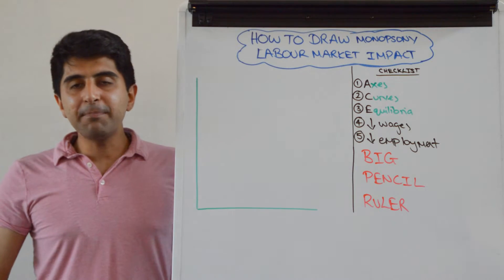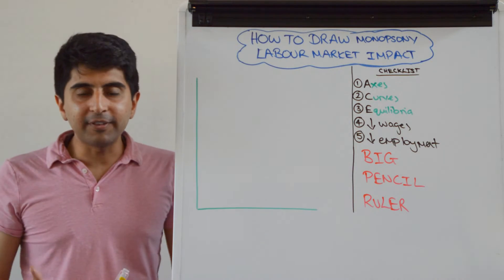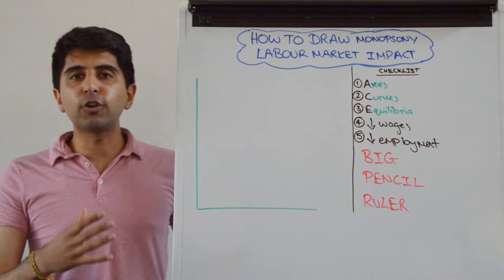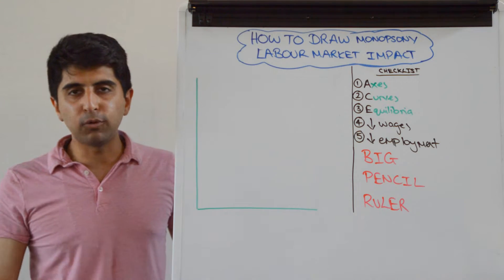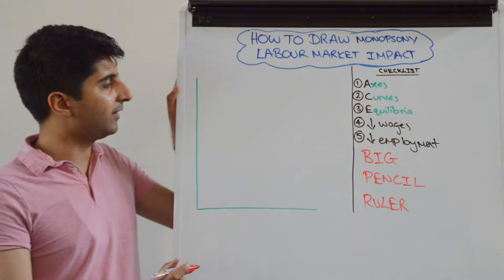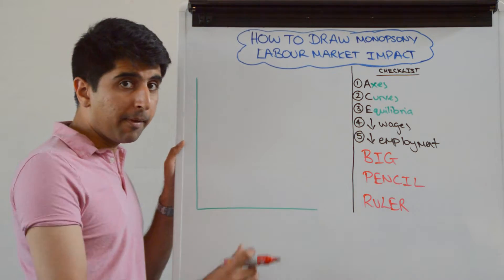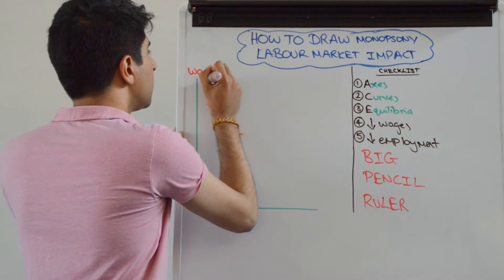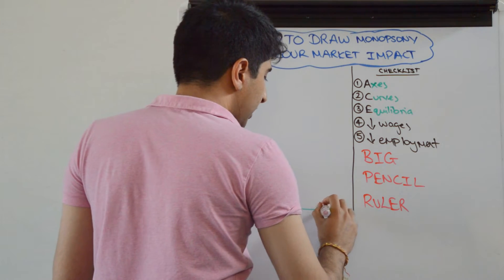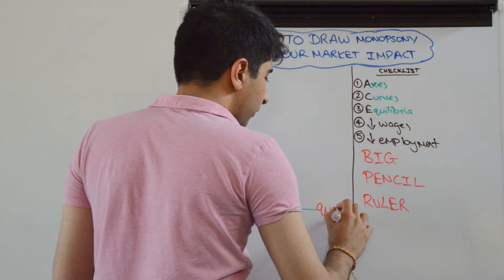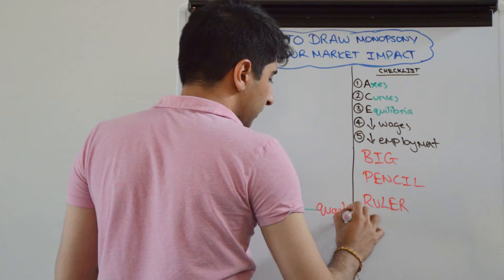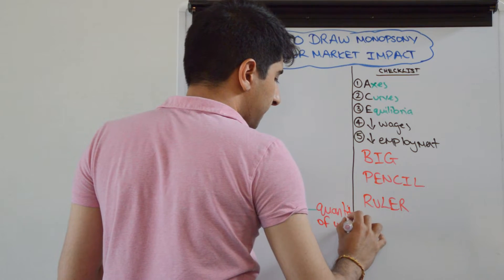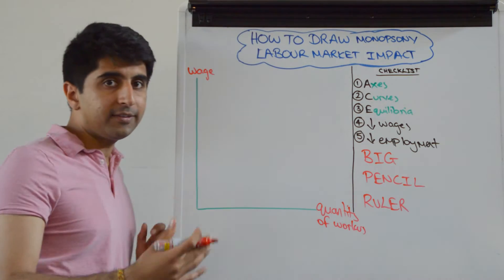Hi everybody. We want to show the impact of a monopsony in a labor market and the end impact on wages and employment. It's a labor market, so on the y-axis we have wage and on the x-axis we have the quantity of workers.